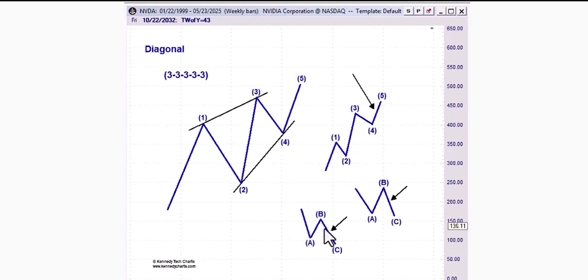So where can an ending diagonal occur? It can occur in the wave C position of a zigzag, or it can occur in the wave C position of a flat, or it can occur in the wave five position of an impulse wave. So I would say typically I find if I had to rank them, diagonals tend to occur wave five of an impulse wave, followed by most likely wave C of a zigzag, followed by wave C of a flat.